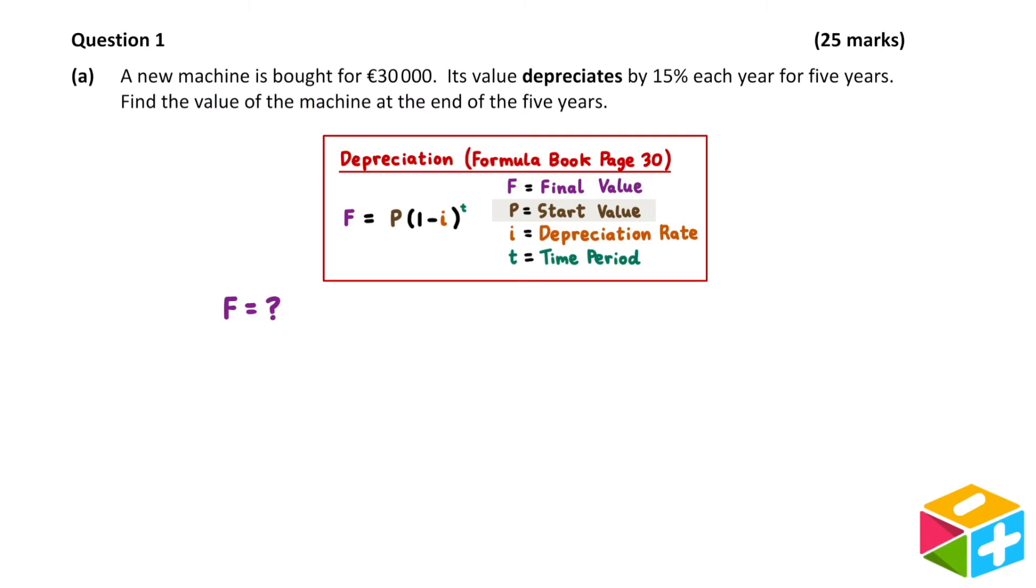P represents the start value, and this is referring to the €30,000 we paid when we bought the machine at the start. I represents the depreciation rate, and we are told that depreciation occurs at a rate of 15% each year. So I is 15%. Some calculators can struggle with percentage signs, so it will be useful to convert this to decimal. We do this by dividing by 100. So 15% as a decimal would be 0.15.